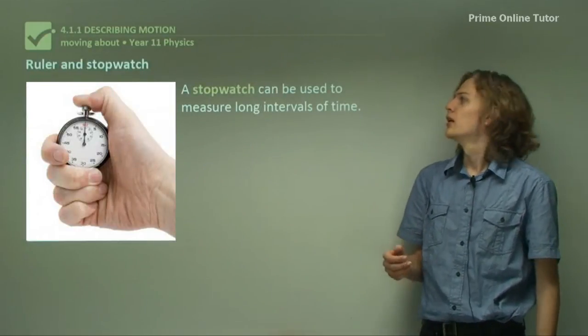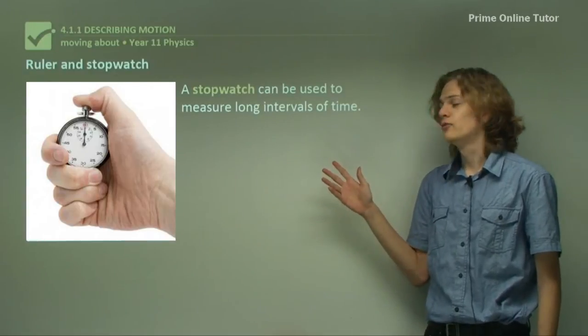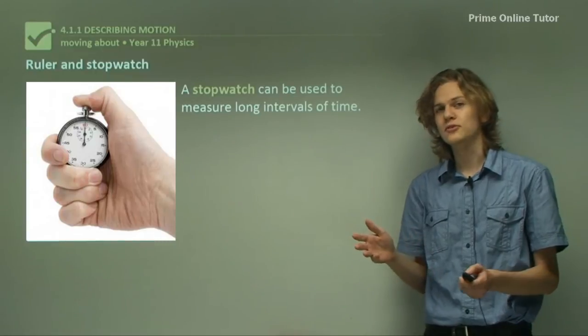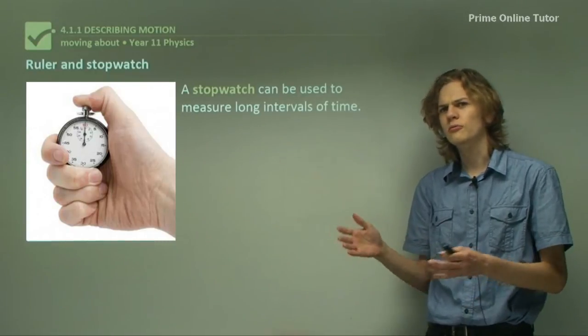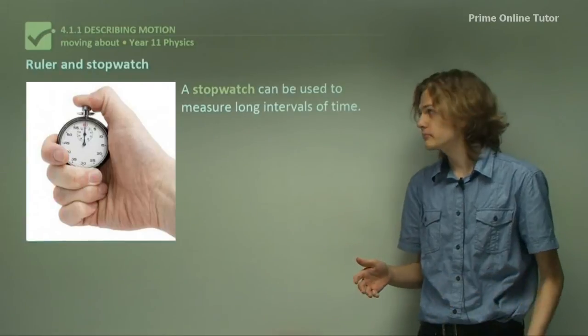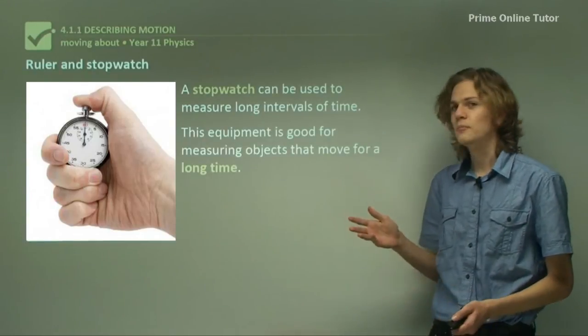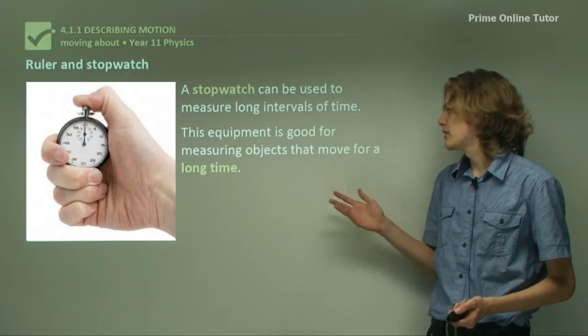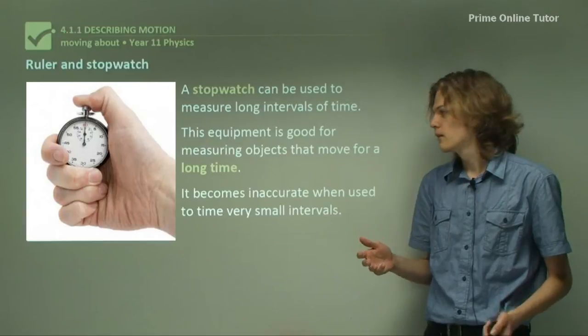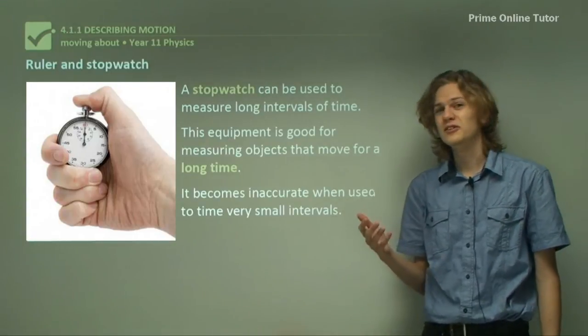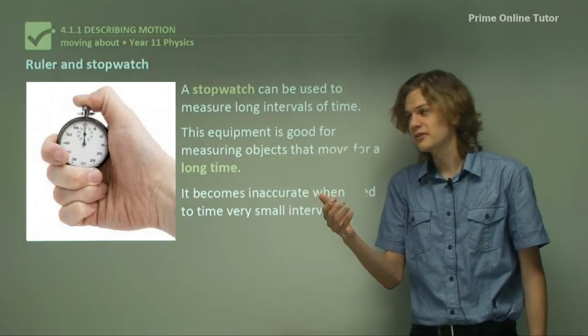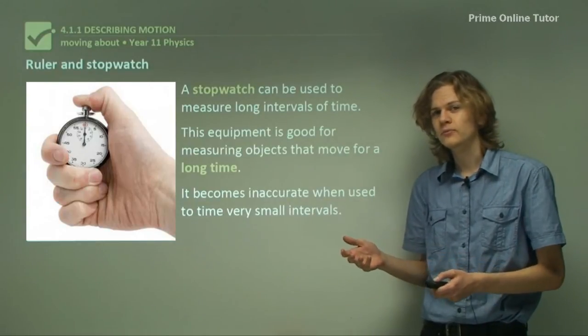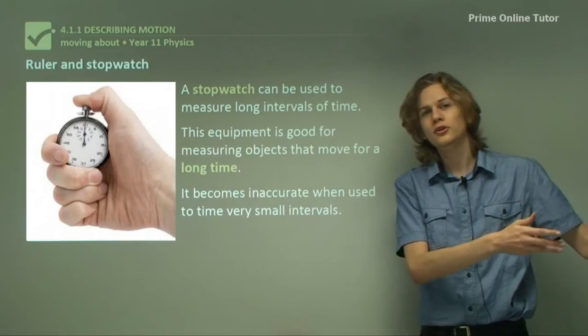So, a ruler and stopwatch. A stopwatch can be used to measure long intervals of time. All the other various things that we'll be looking at will only be measuring short amounts of time, in the sort of ballpark of about 10 or 20 seconds. A stopwatch, because it can measure times as long as minutes or hours, is good for measuring objects that move for a long time. And so it becomes inaccurate when it's used to time very small intervals, because you can't press the button fast enough. So that might be used for measuring athletes as they run around the track, or measuring how long it takes for a car to get from one place to another.